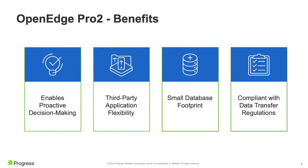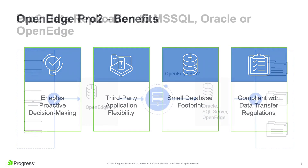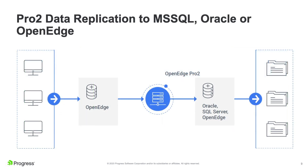So enter Pro2. Pro2 enables proactive decision-making because the data you're making decisions on is real-time replicated. It allows third-party applications to connect to this data, has a small database footprint because we're just keeping track of changes and pushing them to the target, and since we're not exporting to an ASCII file, you don't have a redundant copy of data to manage. Data is only in OpenEdge and your preferred target.